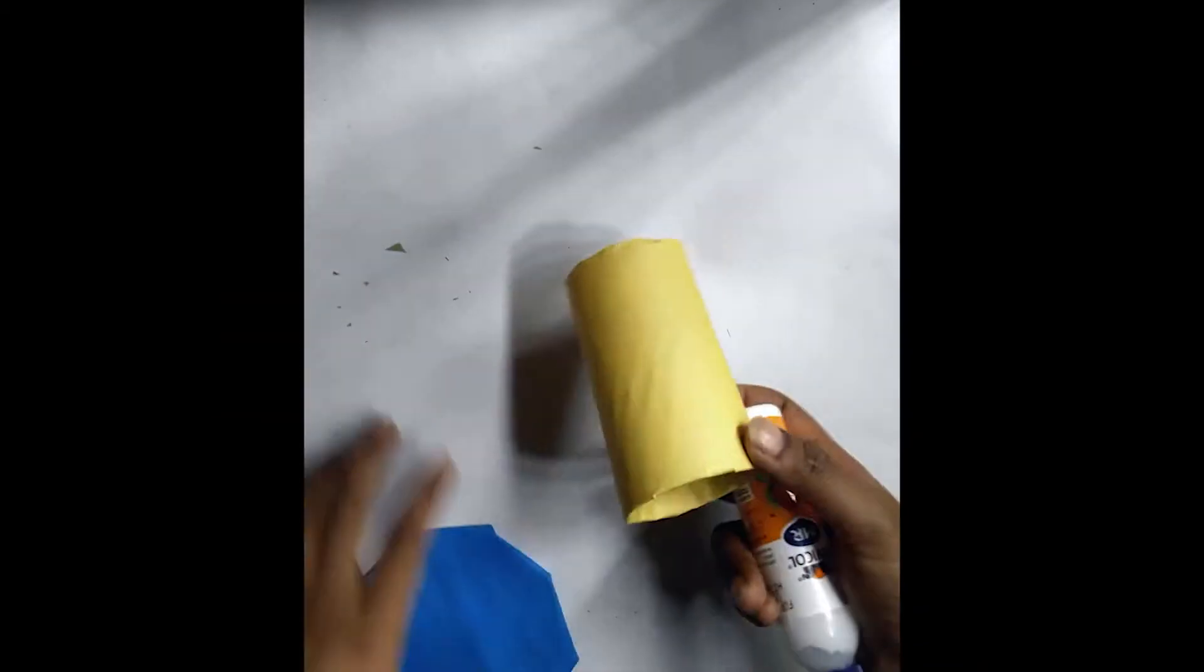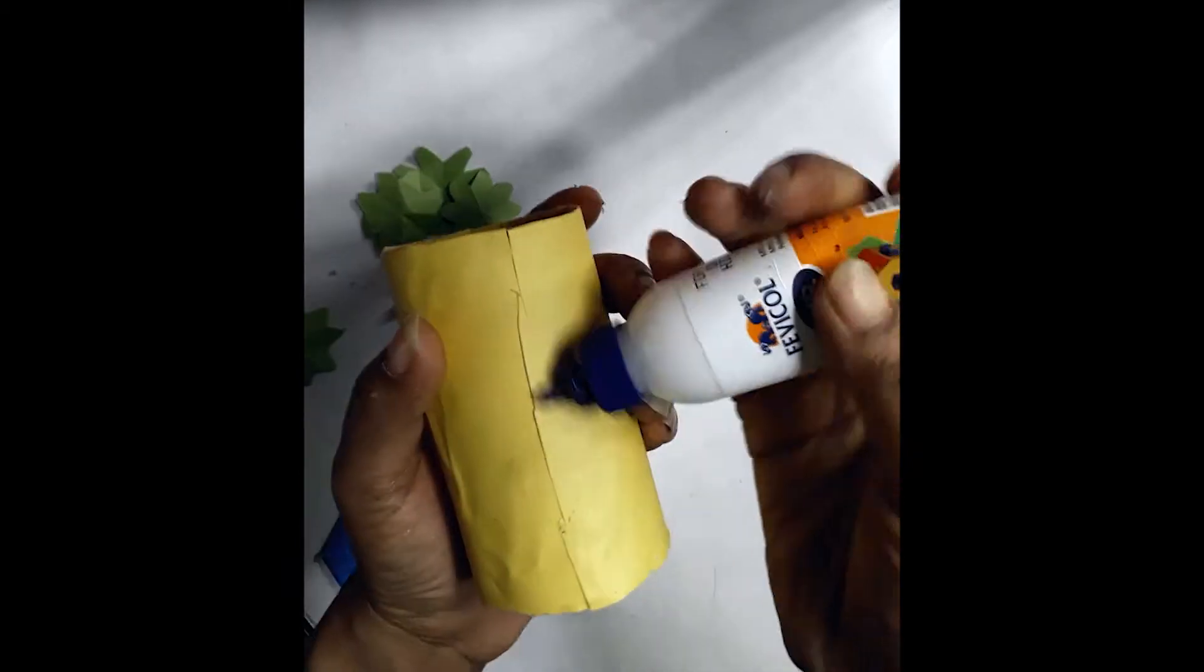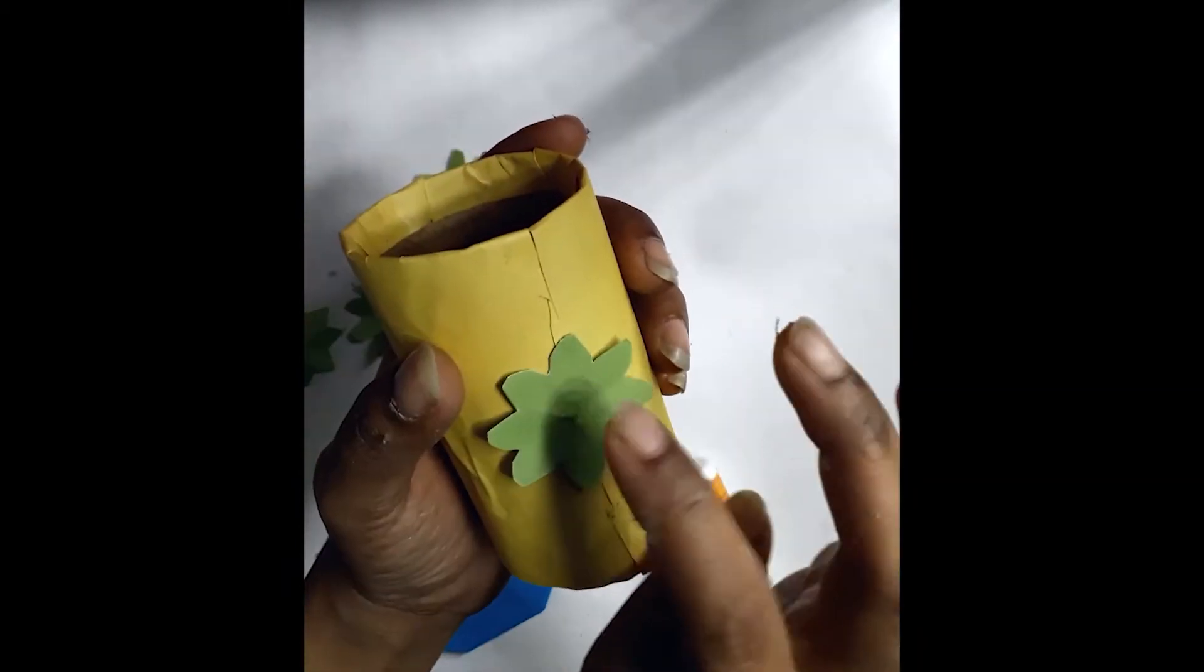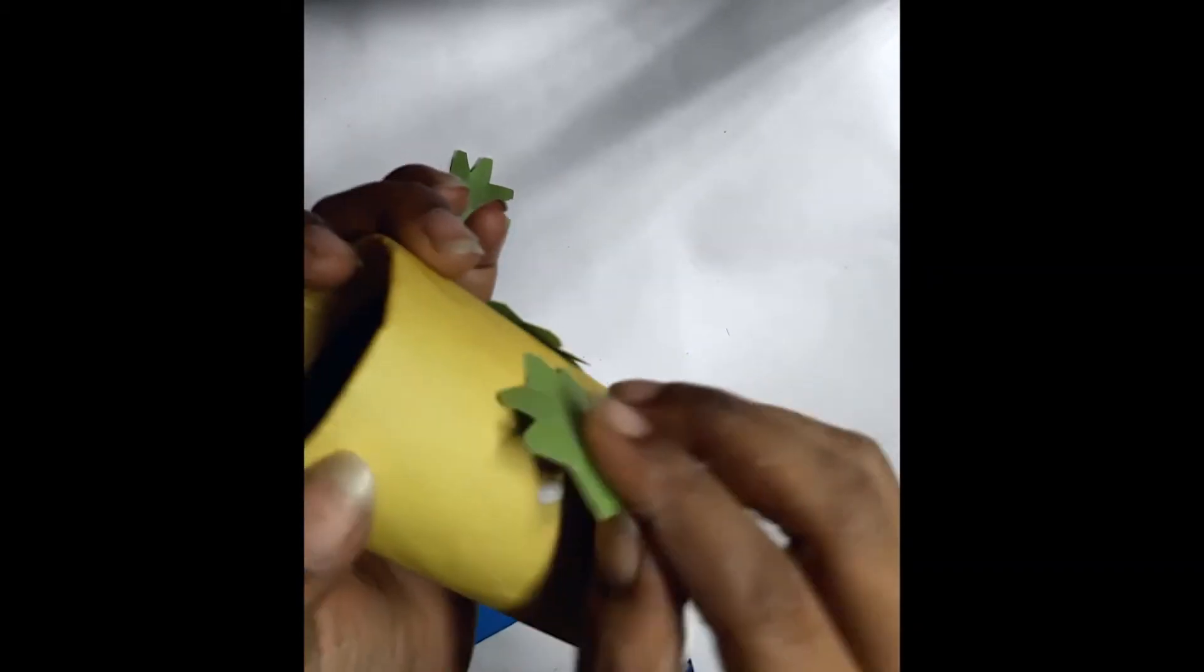Make more by the same way. Now attach it with some glue on the tissue box. Decorate the tissue box with some patty for more attraction.